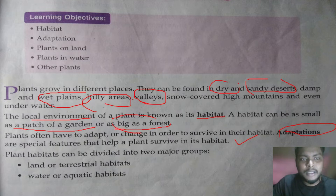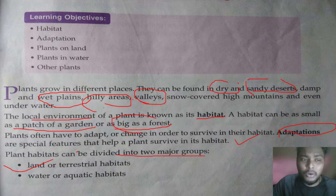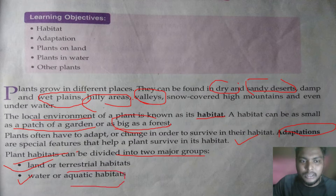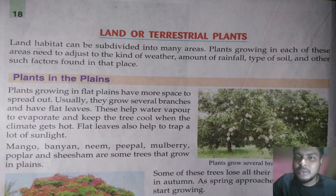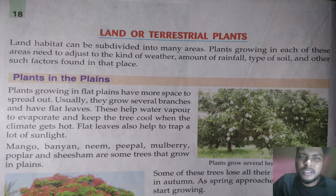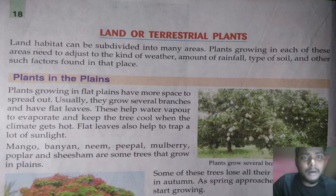Plants can be divided into two major groups: the plants that grow on land and the plants that grow on water, also called aquatic habitats. Land or terrestrial plants can be divided into many areas. Plants growing in each of these areas need to adjust to the kind of weather, amount of rainfall, type of soil, and other such factors found in that place.